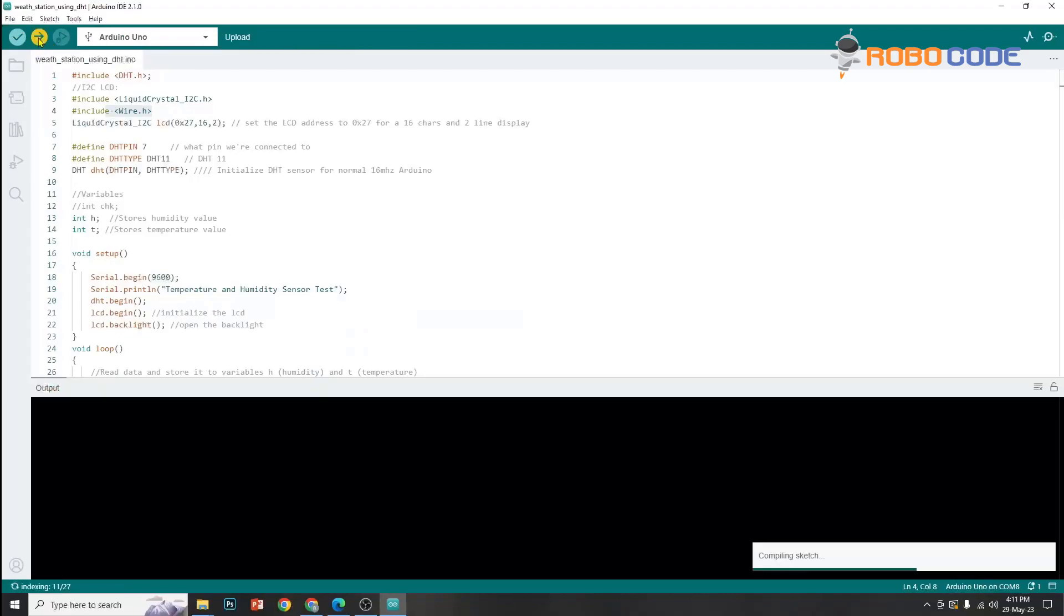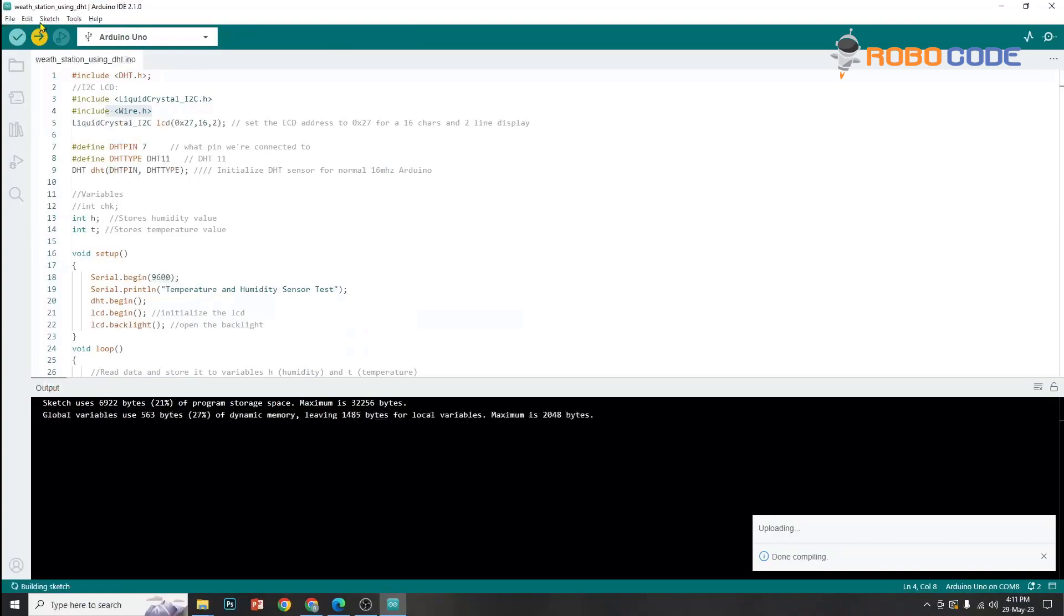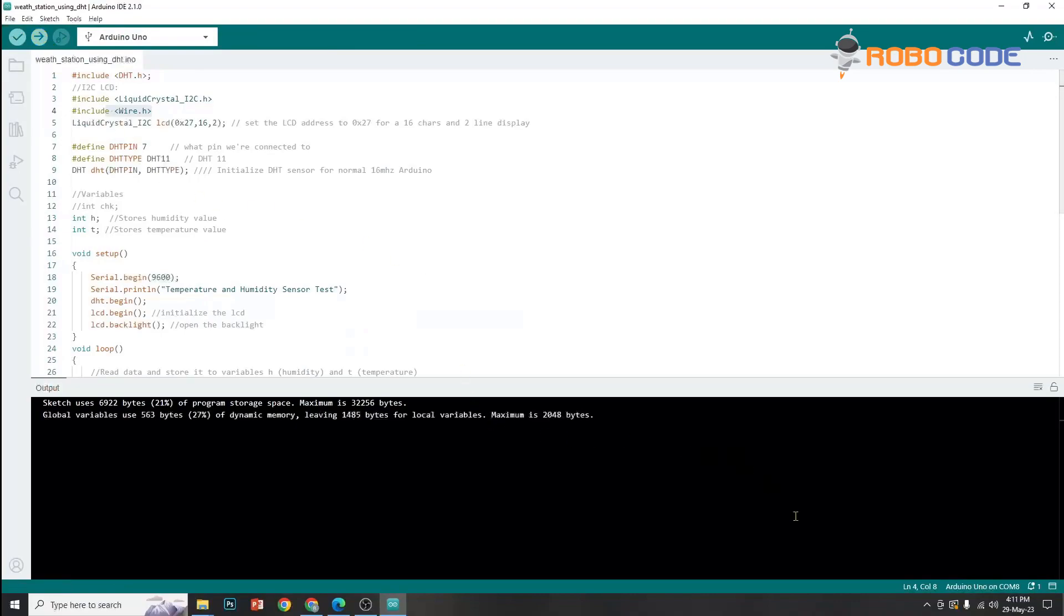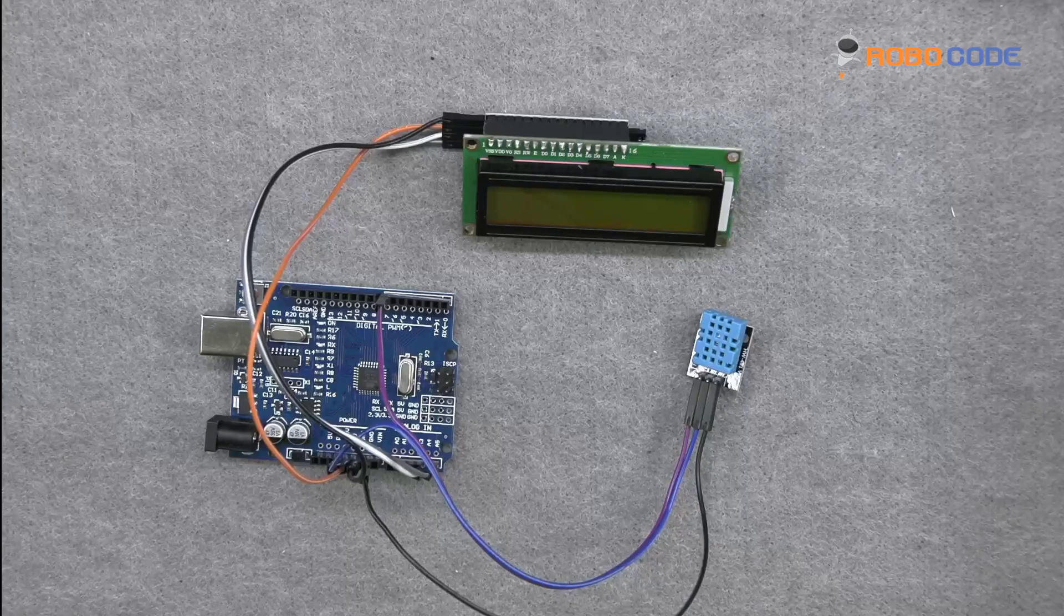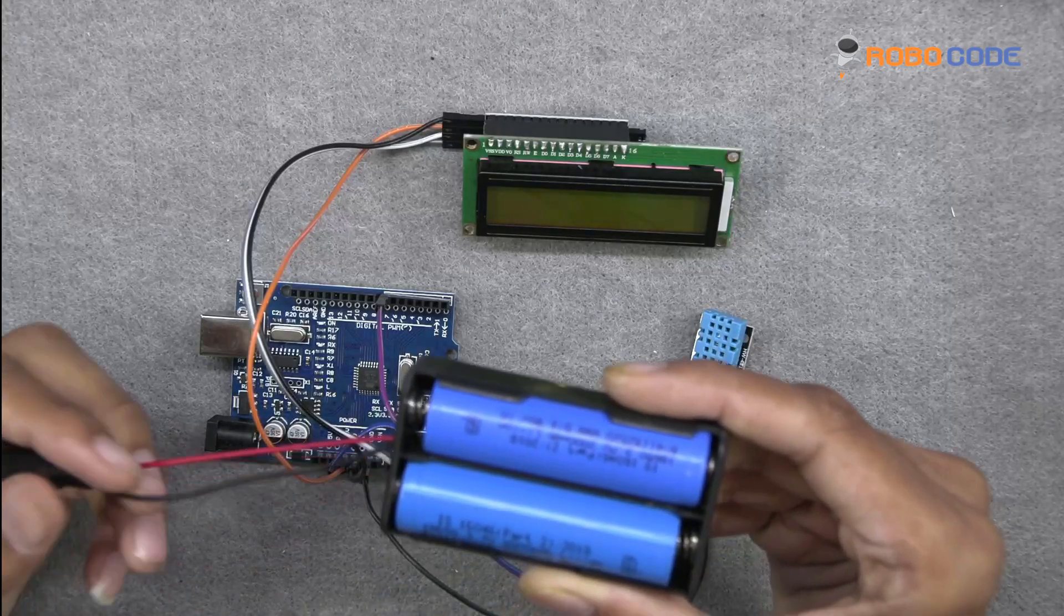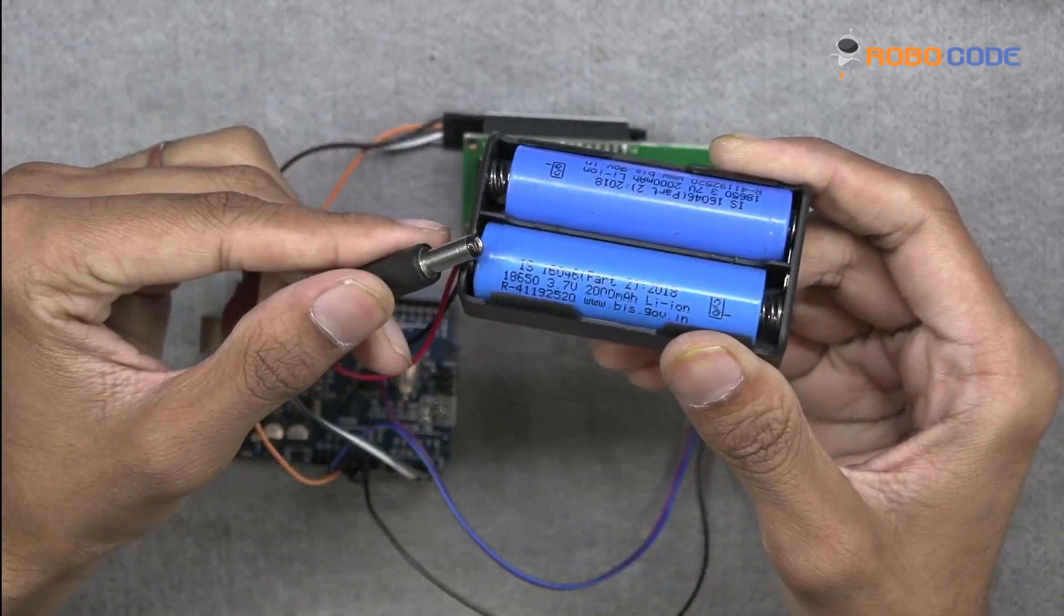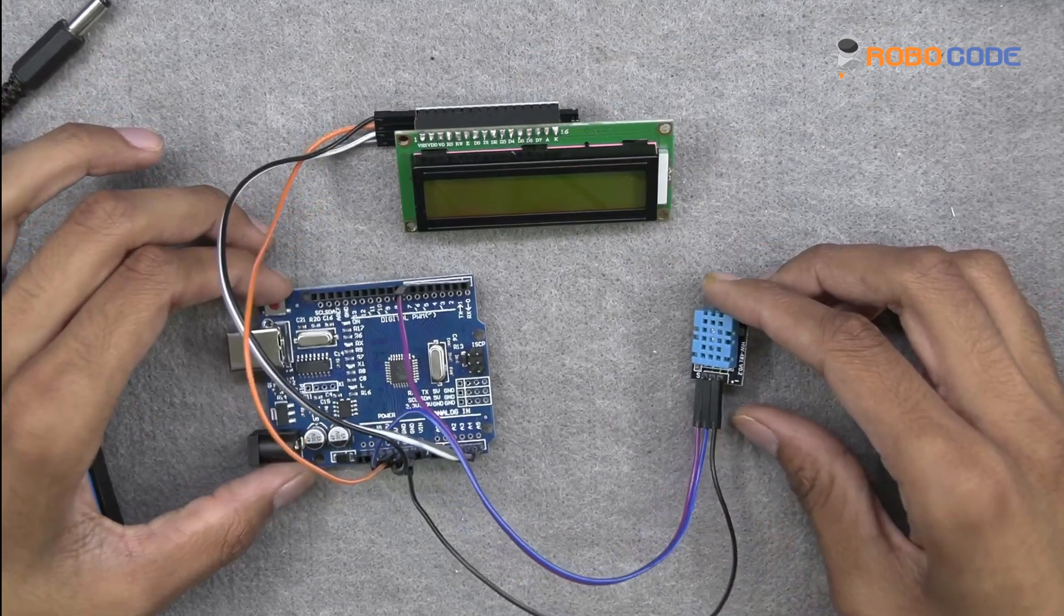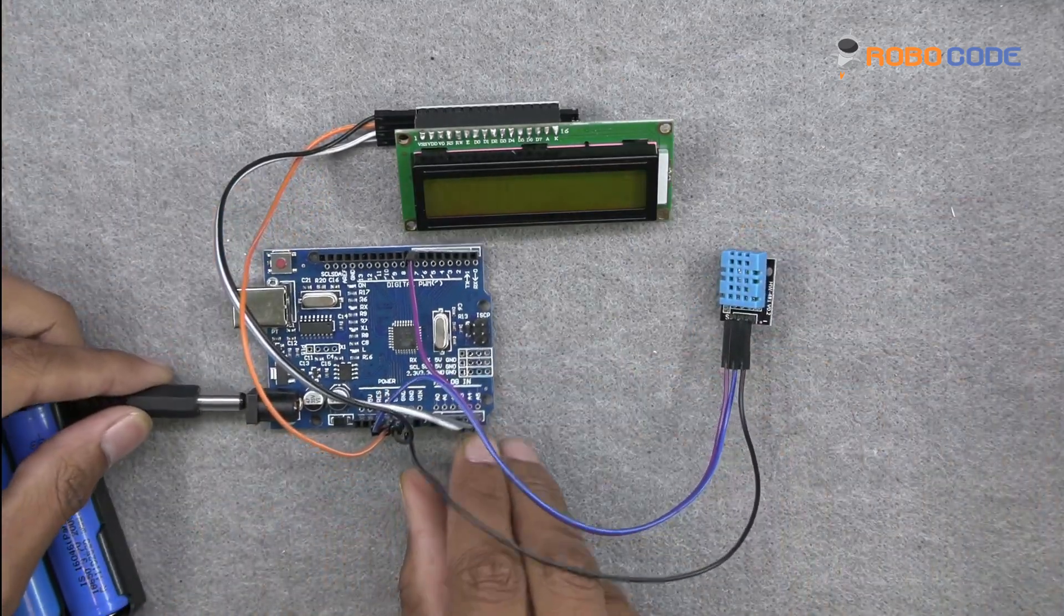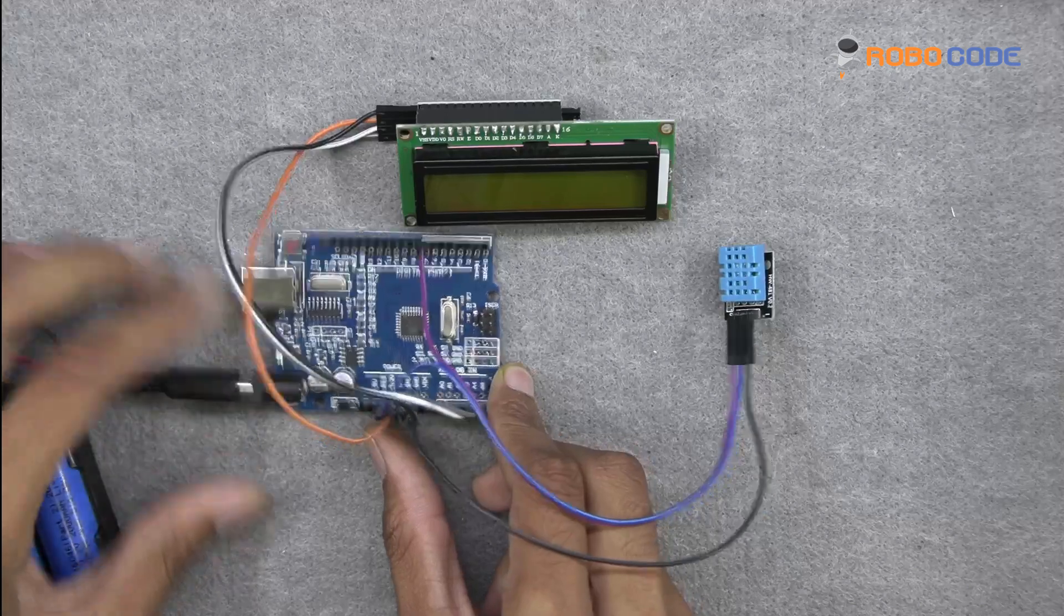If there are any errors you can see them in this black window which is the output. If there is no error then the code would be uploaded. Once the code is uploaded, we will connect the battery to the Arduino UNO.